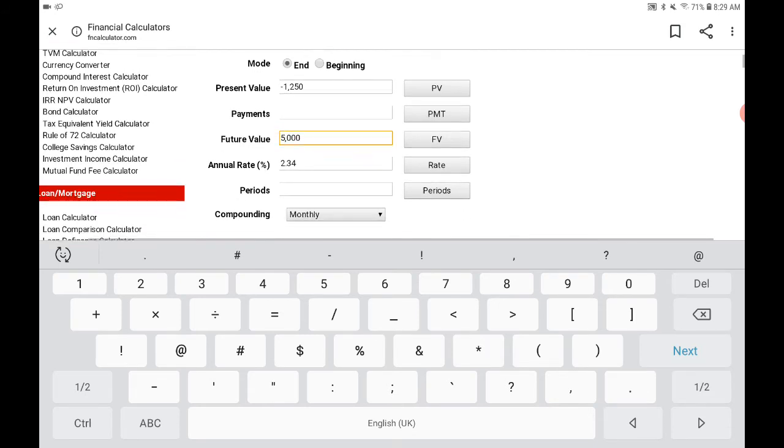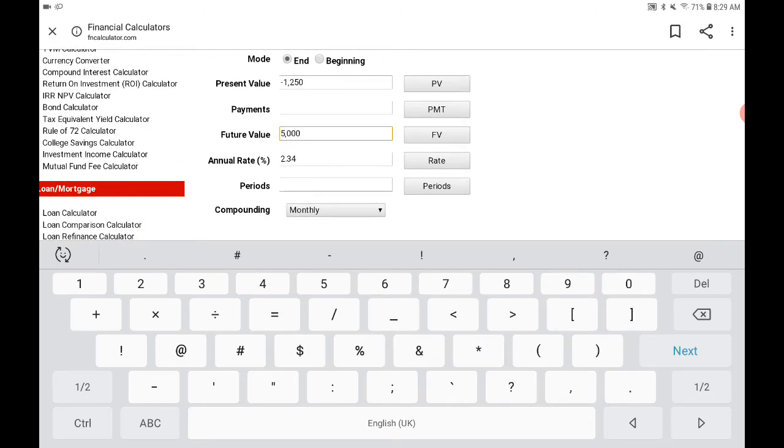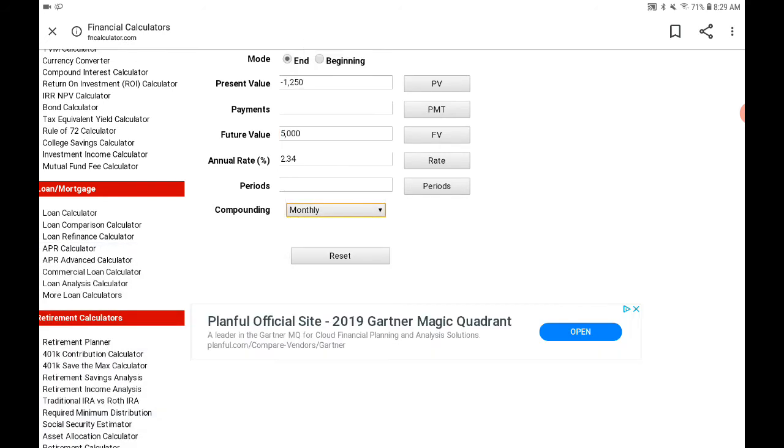We'll leave payments alone. Our periods, we don't know, that's what we're going to solve for. Remember a period is our N, but we do know that it's compounded monthly. Drop down menu, it's already there, so we're good.